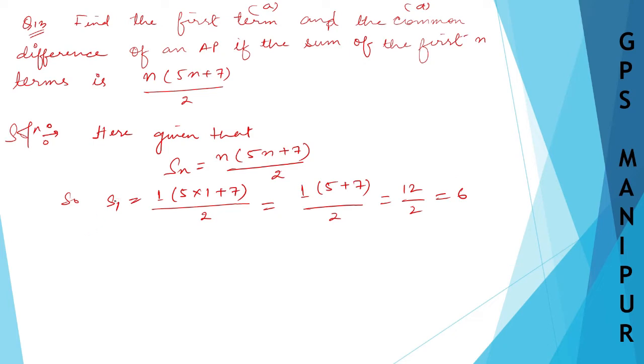Now I can write down something, the formula for S1, the formula for SN will be N divided by 2, 2A plus N minus 1, D. This is the formula for SN, so let me find out for S1, S1 I can write down as 1 instead of N divided by 2, 2A, so 2 into A, I do not know A, so write down A plus N, N is 1.